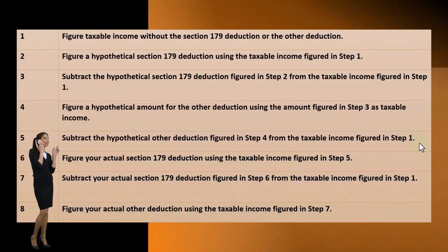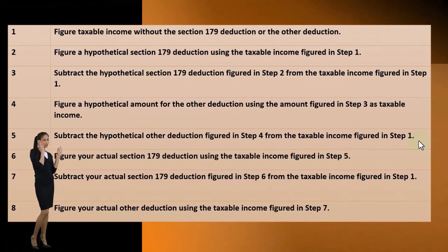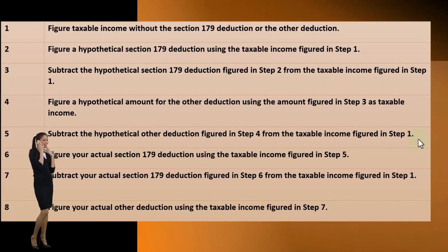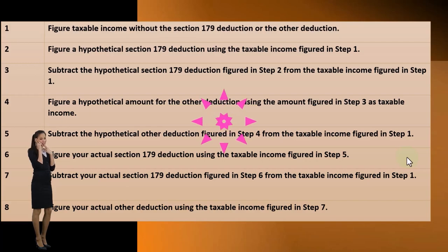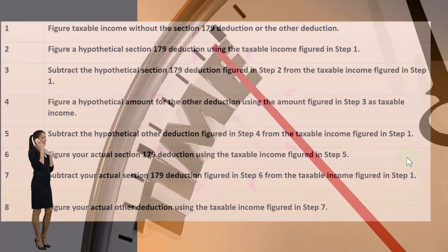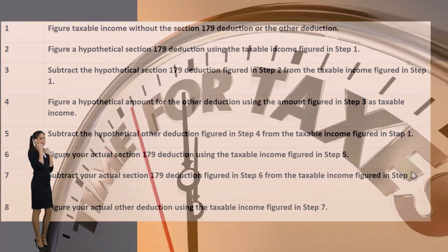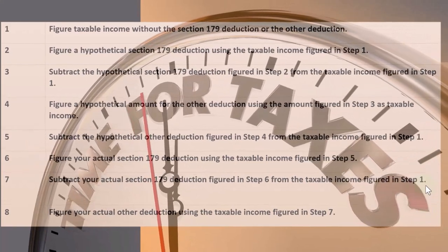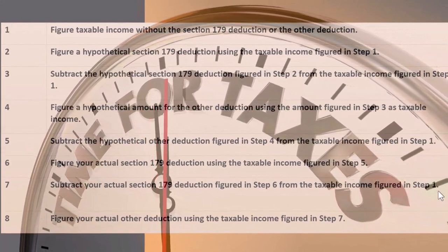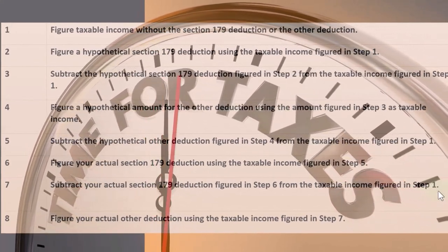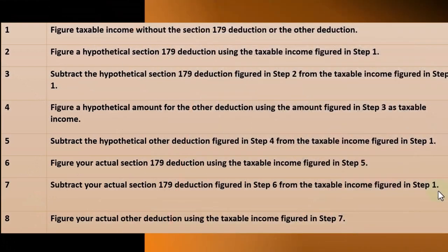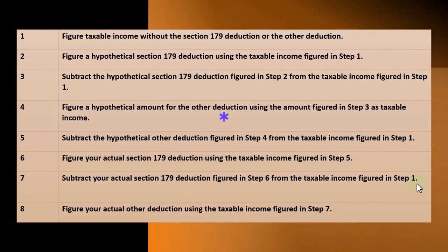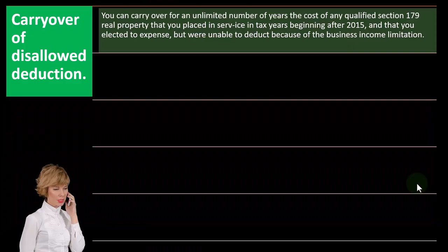Subtract the hypothetical other deduction figure in step four from the taxable income figured in step one. Six, figure your actual 179 deduction using the taxable income figured in step five. Seven, subtract your actual Section 179 deduction figured in step six from the taxable income figured in step one. And finally, eight, figure your actual other deduction using the taxable income figured in step seven.